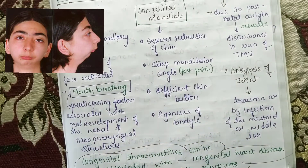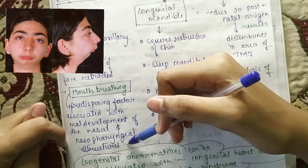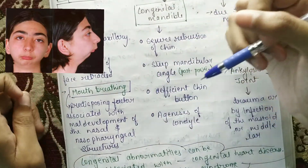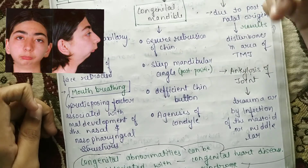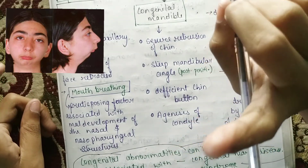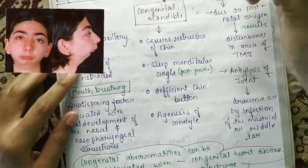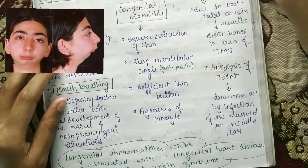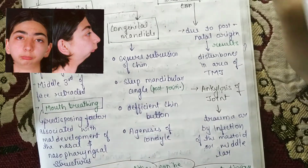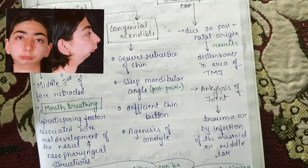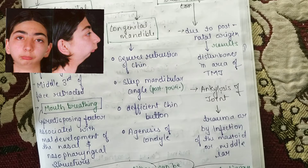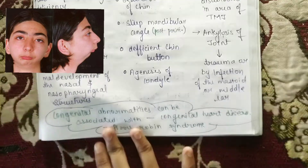Mouth breathing is associated with mild development of nasal and nasopharyngeal structures. If there is congenital micrognathia of the mandible, there can be severe protrusion of the chin, a steep mandibular angle which is posteriorly positioned, and a deficient chin — also called a difficult chin or chin buttons.